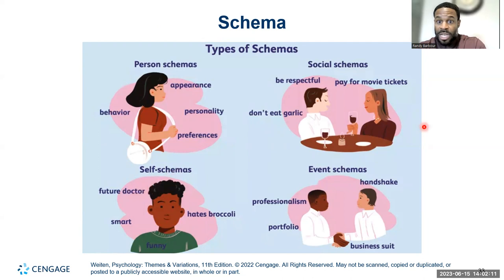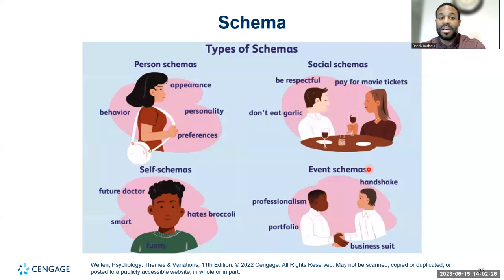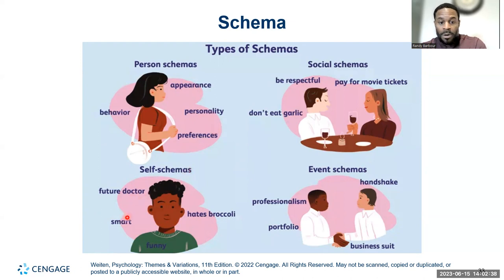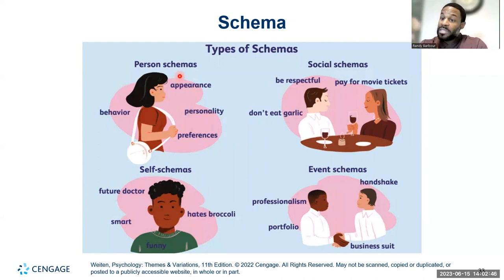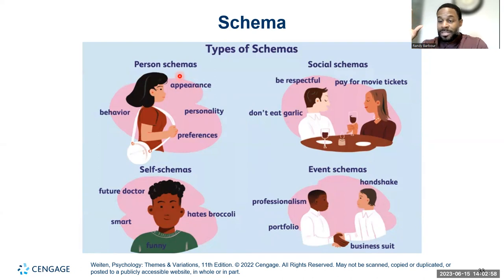Schemas include social schemas — on a date you're respectful, you don't eat garlic, you pay for movie tickets. At a networking event you show professionalism, bring a portfolio, wear a business suit, shake hands, make eye contact. Person schemas cover appearance, behavior, personality, preferences. Your self-schema might be 'I'm a future doctor, smart, I hate broccoli.' You might have a schema for a basketball player — tall, wearing sweatpants and slides, having tattoos.